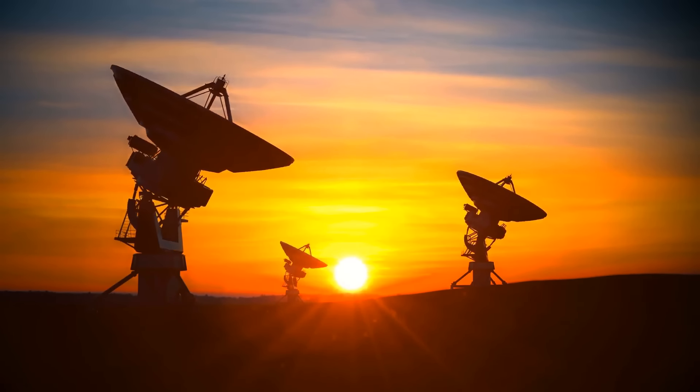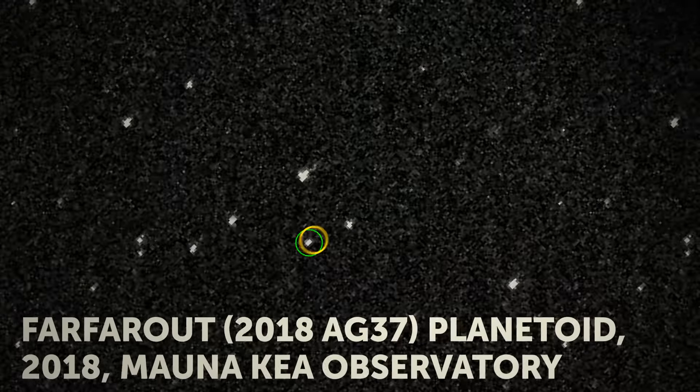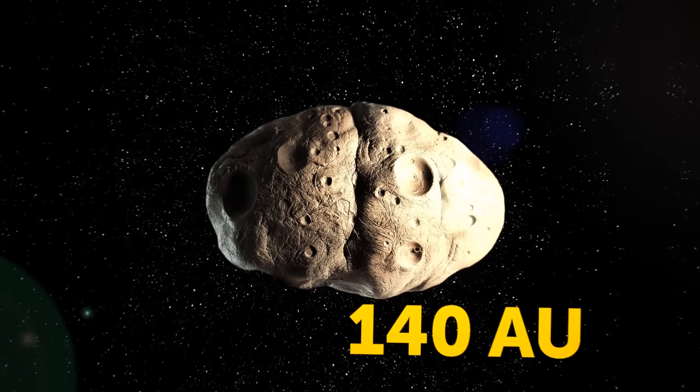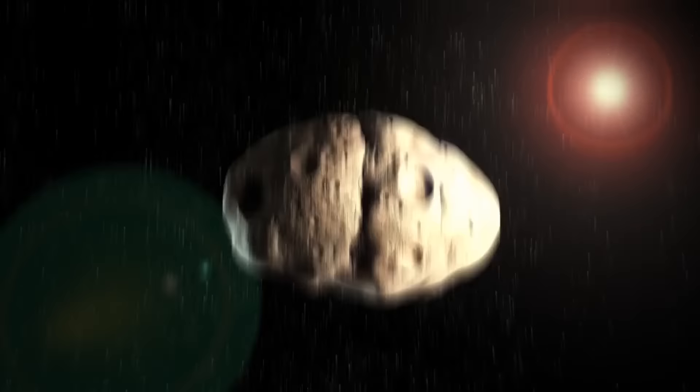Another technique we could use is to find the potential planet through a good, old-fashioned telescope. But as you can imagine, that's insanely tricky. The furthest object that we've found in our solar system is a planetoid appropriately named Far Far Out. But that's only 140 AU away from the Sun, that's only like a quarter of the way to Planet X.